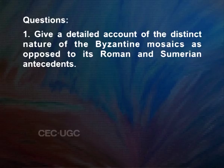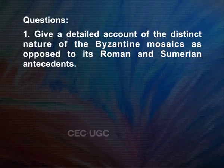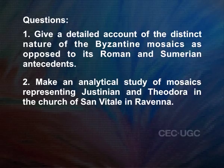Here are some questions for you. First, give a detailed account of the distinct nature of the Byzantine mosaics as opposed to their Roman and Sumerian antecedents. Second, make an analytical study of the mosaics representing Justinian and Theodora in the church of San Vitale in Ravenna. Third, discuss the conspicuous change that took place in Byzantine art after iconoclasm was defeated.